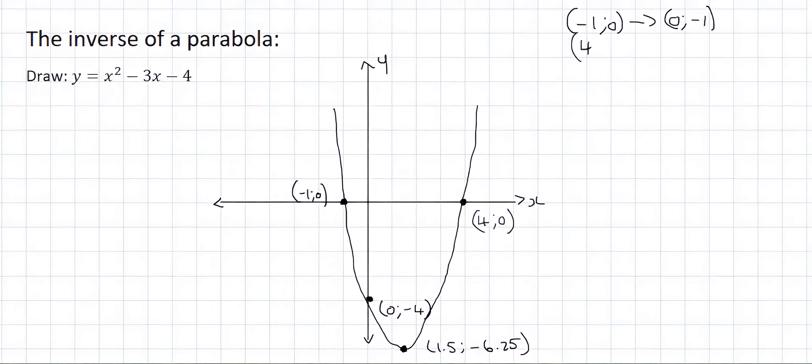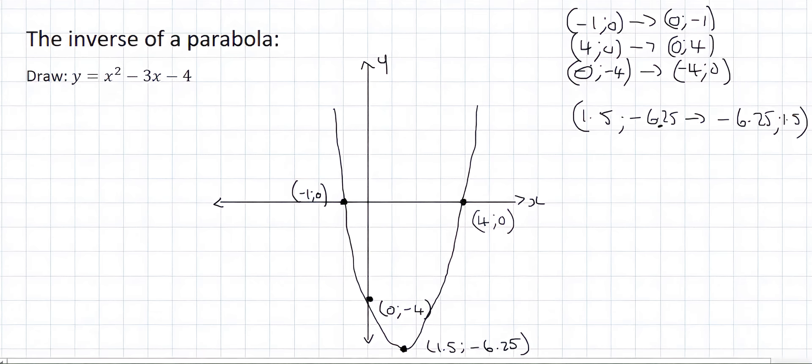The coordinate 4, 0 now becomes 0, 4. The y-intercept of 0 minus 4 now turns into an x-intercept which is going to be minus 4 and 0. And then the turning point switches around as well.